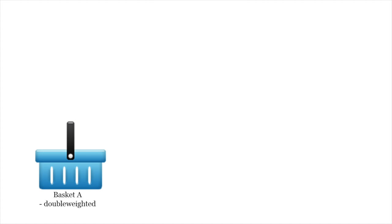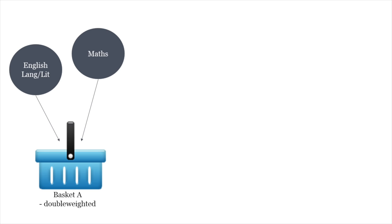Basket A includes two subjects: Maths and one of English Language or English Literature. The points for the two subjects in this basket are double-weighted, but only if a pupil has taken both English Language and English Literature. In practice, in most schools, pupils will do both English Language and English Literature.